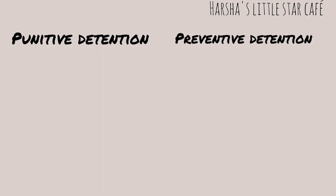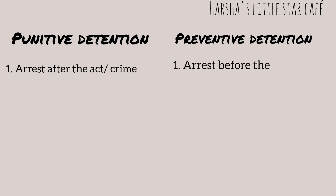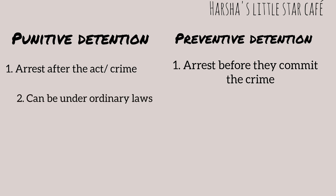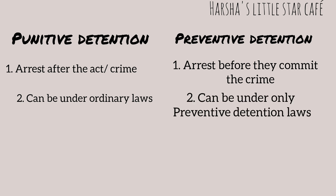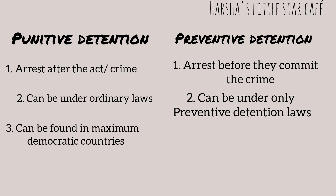The objective of punitive detention is that if anybody has already committed a crime, then the person will be arrested — it means after the act or after the crime. In preventive detention, it is to stop a crime from happening; they arrest the person before they commit the crime. Punitive detention can be under any ordinary laws, but preventive detention can only be under preventive detention laws. In most democratic countries, provisions for punitive detention are available.